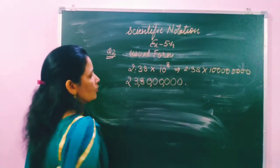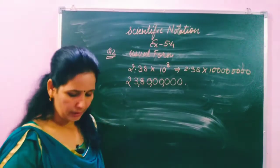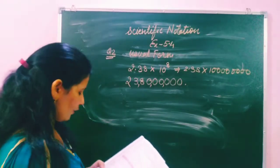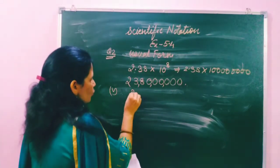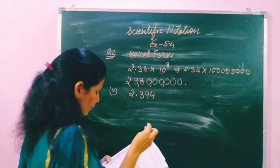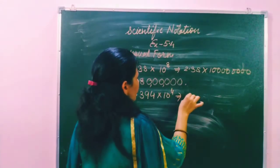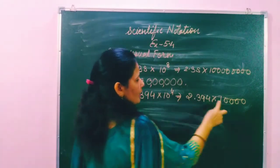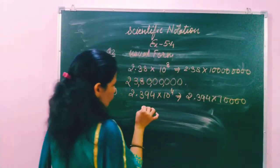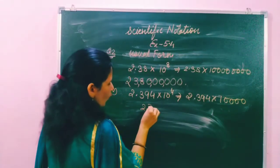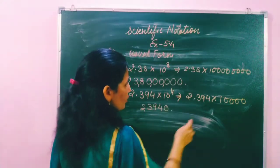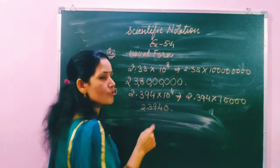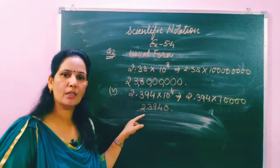That gives us 23 crore 80 lakh. Let's take one more part: 2.394 × 10^4. Ten raised to the power 4 means 1 followed by four zeros. The decimal shifts 4 places to the right: 1, 2, 3, 4. Where no digit exists we write 0. So 2.394 × 10^4 written in usual form is 23,940. This is how we convert scientific notation back to usual form.